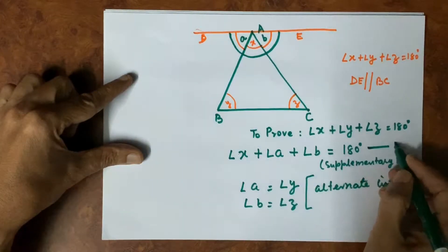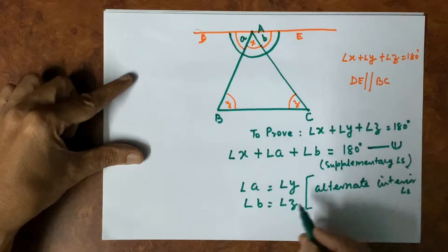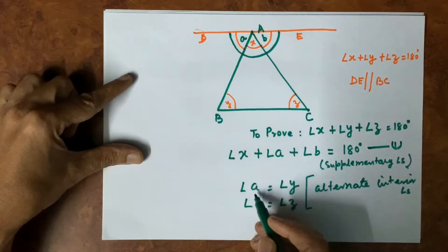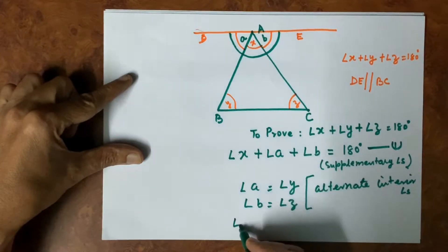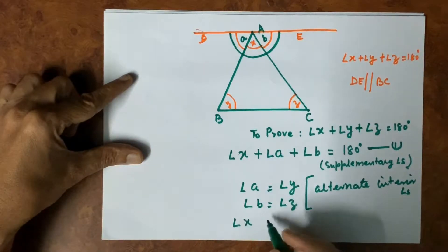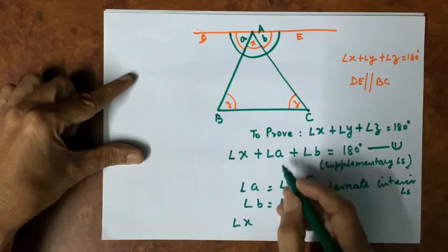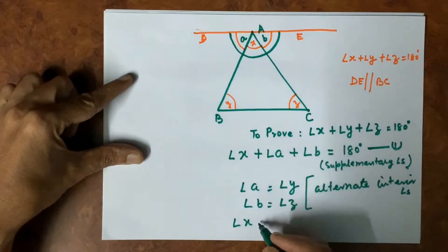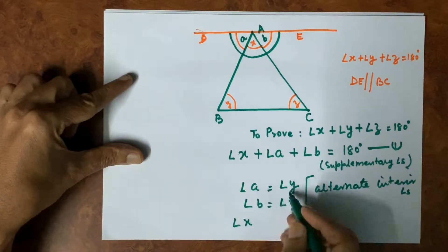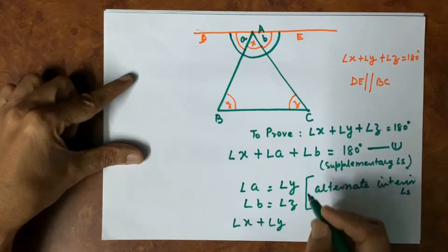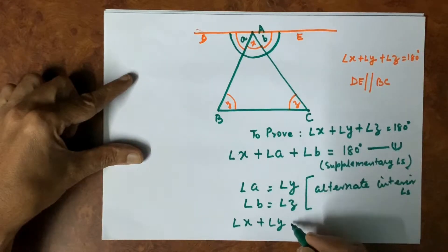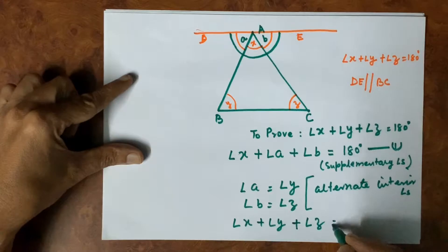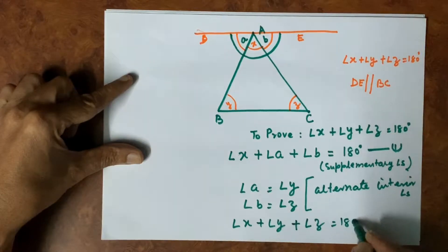So, in equation 1, we put the value of angle A as angle Y. Angle X plus angle A — which equals angle Y — plus angle B, which equals angle Z, is equal to 180 degrees. Hence, angle X plus angle Y plus angle Z equals 180 degrees.